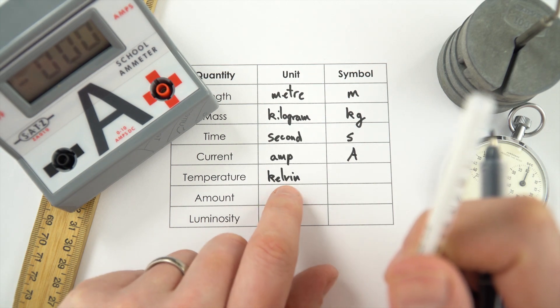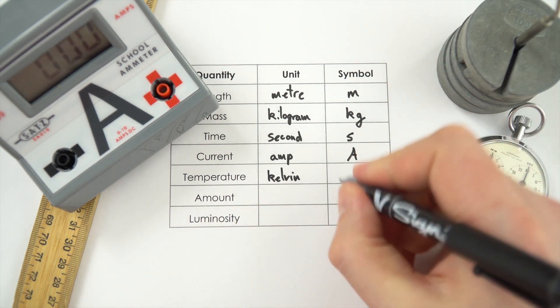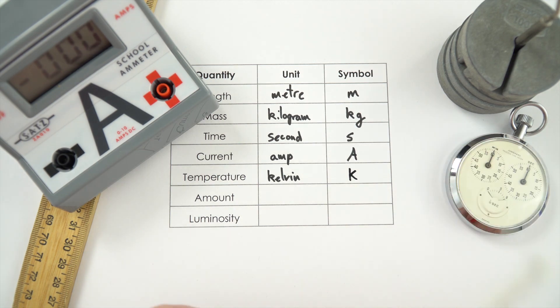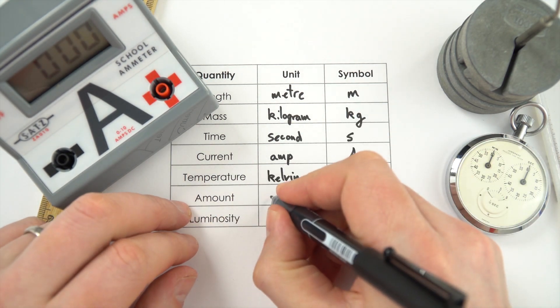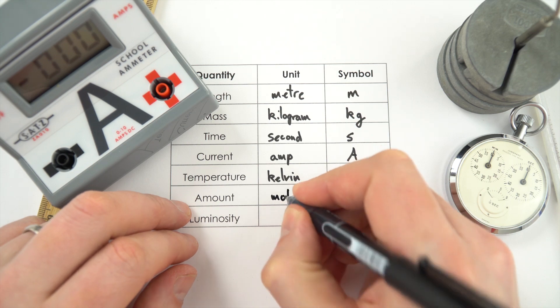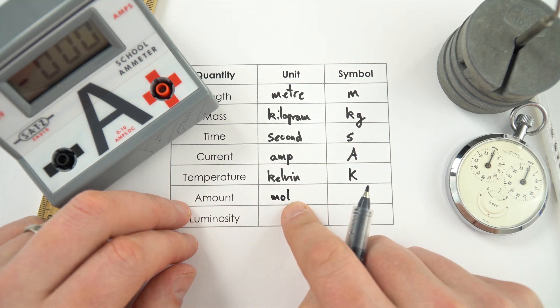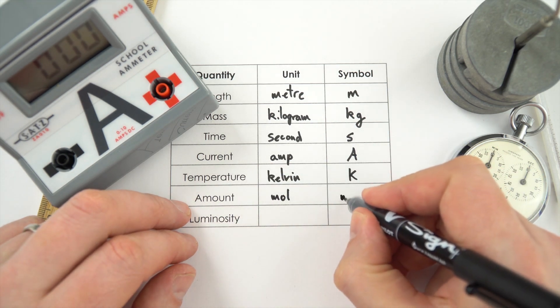But this one here goes down to absolute zero and you can't get any colder. And the symbol for that is a capital K. We then have the amount. This one here is more of a chemistry thing because if you're looking at the amount of different substances we measure that in the mole. And the symbol for that is no shorthand we just use mole.